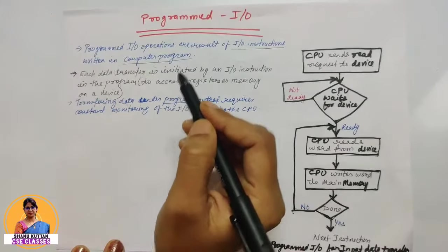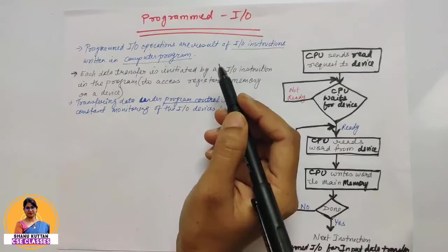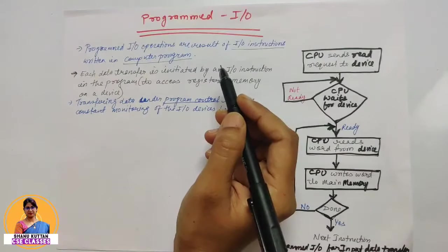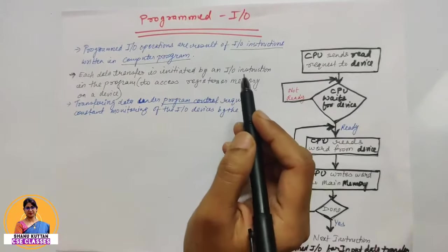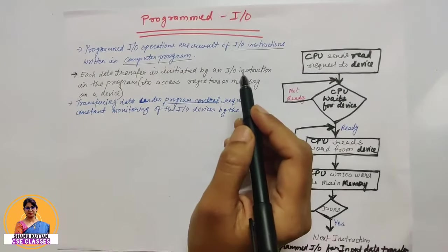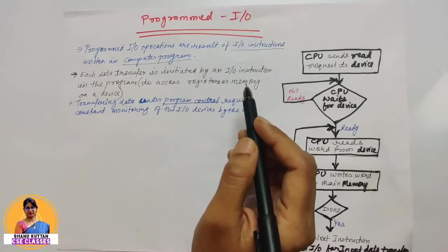Computer programs mein jo hum in out instructions likte hai, like C++ mein C in, C out instructions likte hai, ya print karane ke liye kuch hum instructions dete hai, toh us tarakke instructions aate hai I/O instructions. So jo program ke through generate hoote hai instruction aur uski wajah se jo data transfer hoota hai, woh generally programmed I/O operations mein aata hai.